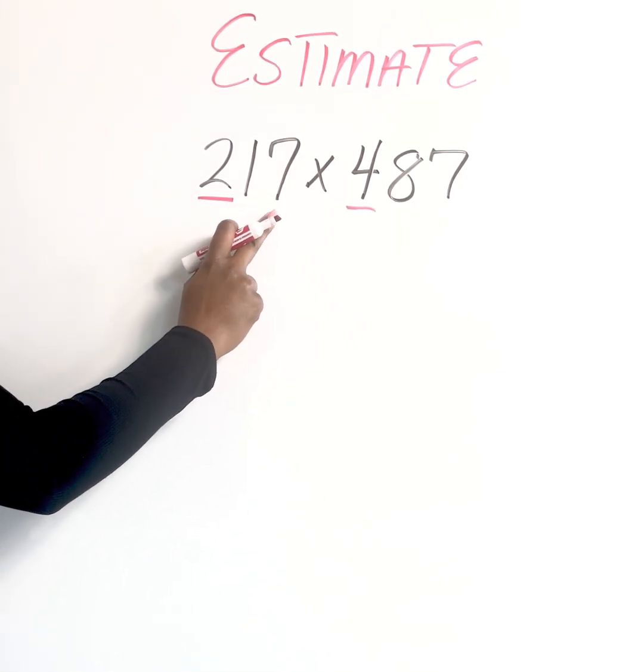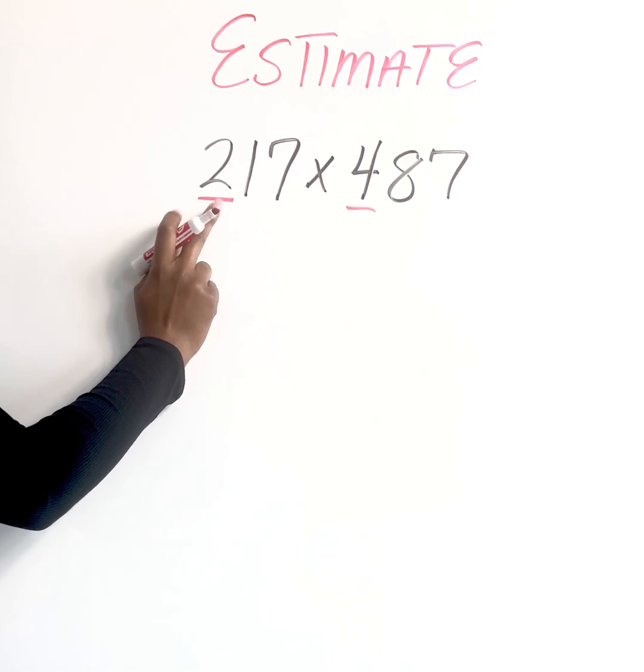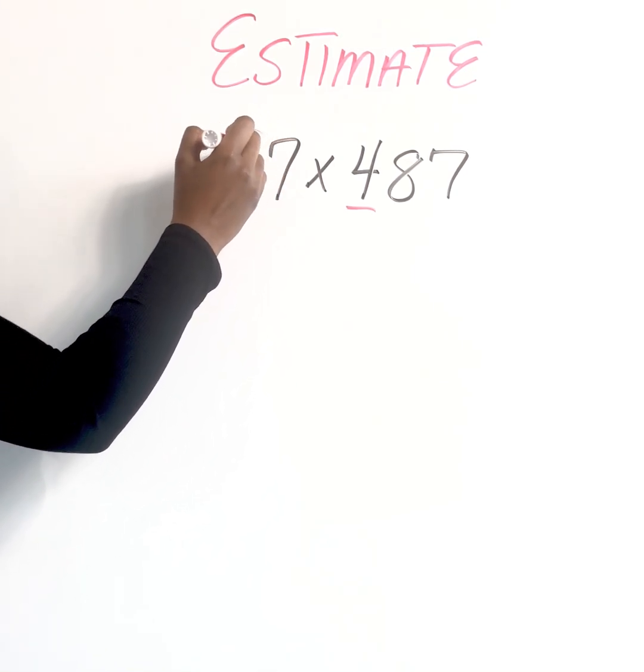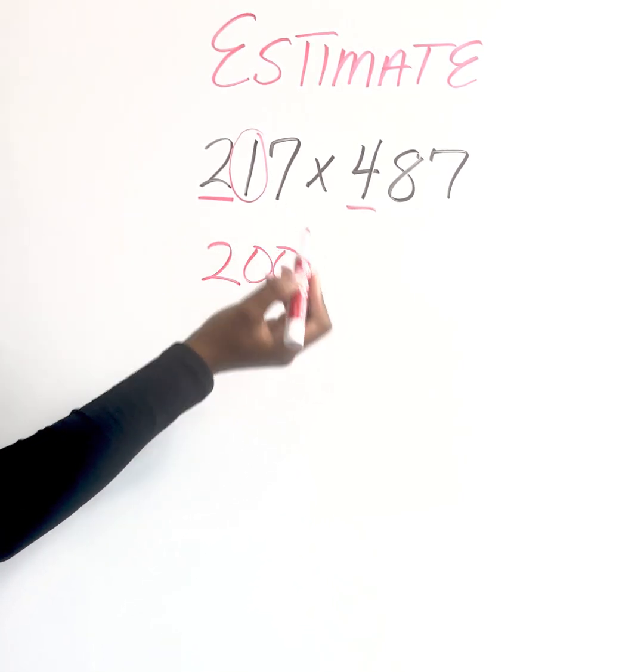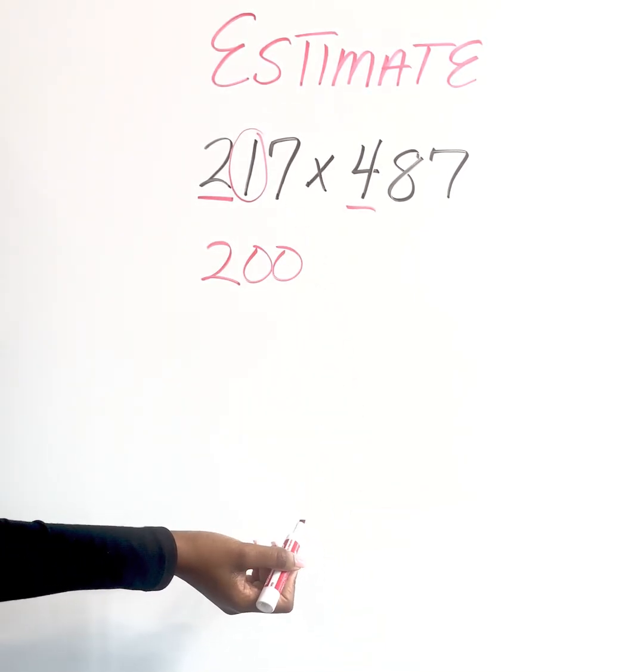All right. So if I'm rounding 217 to the nearest hundred, because that's my leading value, I assess the value to the right of it. So because that's a one, my two is going to stay the same and everything behind it is going to change to zeros.